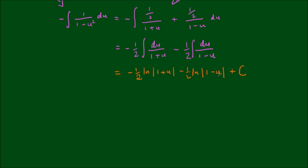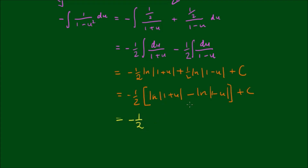We've made a small mistake: log of 1 minus u requires dividing by the derivative of the inside, which is negative 1, so this actually becomes plus one half. Taking negative one half out the front, the second sign becomes negative again, giving log of 1 minus u. Using log laws, we combine the two logarithms to get negative one half times log of (1 + u) over (1 − u), where u equals cos of x.